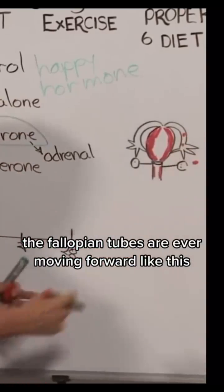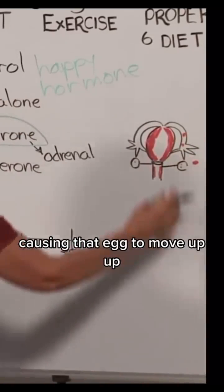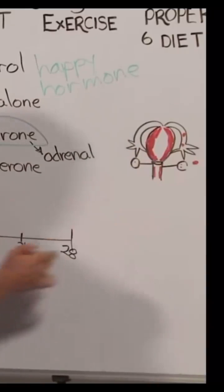The fallopian tubes are ever moving forward like this, causing that egg to move up, up.